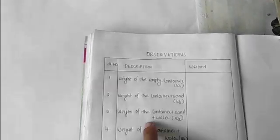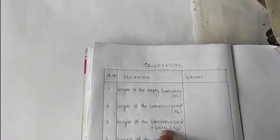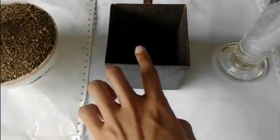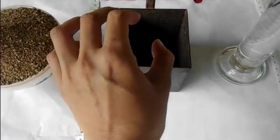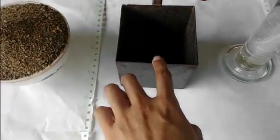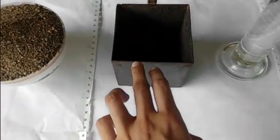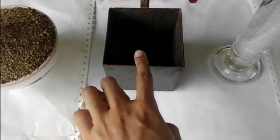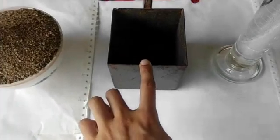Next, take note the weight of container plus sand plus water. For which, add water into this container which is already filled with sand, so that water can completely fill the entire voids in between the sand particles. Finally, take the weight of container plus sand and water.